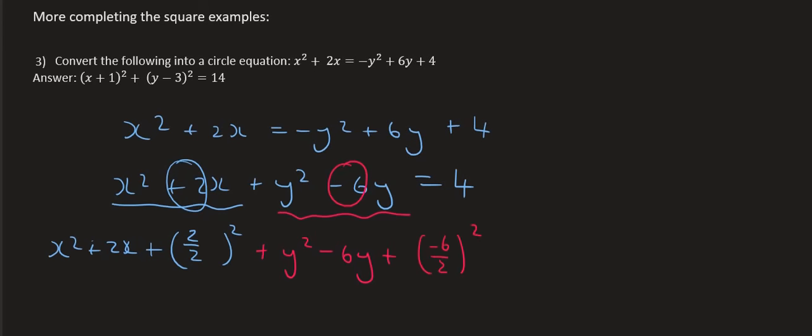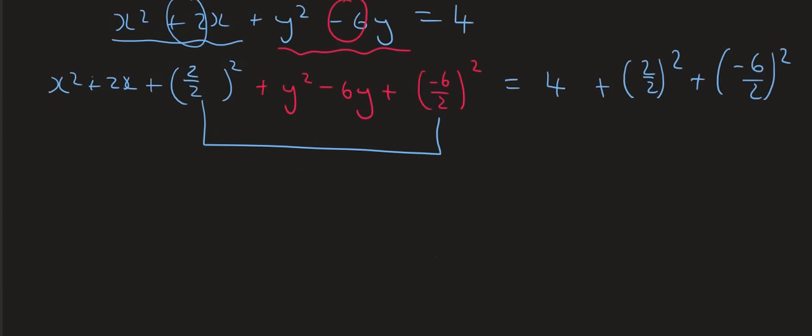Then on the other side, it's just going to be equals to 4. And then we're going to add these two sides. So it's going to be plus 2 over 2 squared plus minus 6 over 2 squared. Now going into the last step, we're going to form our brackets. See how it becomes very repetitive. I hope by now you guys are getting this. So we're going to take this one and we're going to take that one.